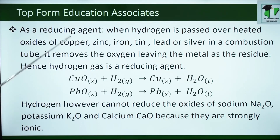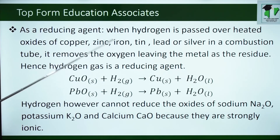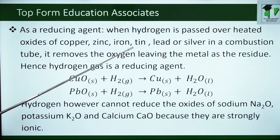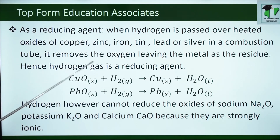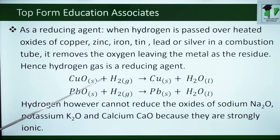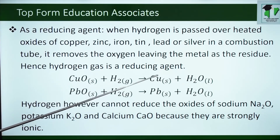Chemical properties. First, it can act as a reducing agent. When hydrogen is passed over heated oxides of copper, zinc, iron, tin, lead or silver in a combustion tube, it removes the oxygen, leaving the metal as a residue. Hence hydrogen gas is a reducing agent. You can see it can reduce copper oxide using hydrogen gas to get the metal copper, which is a very useful metal.